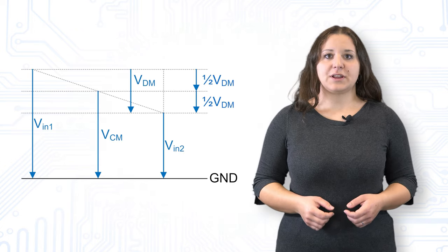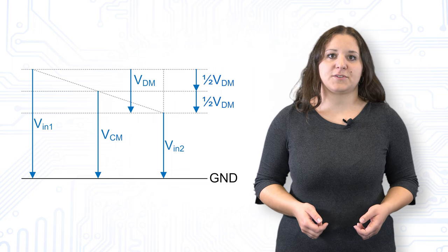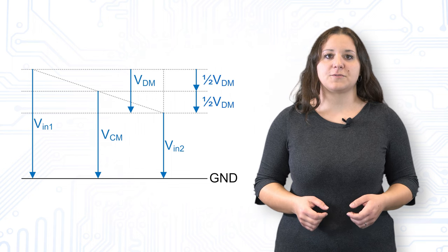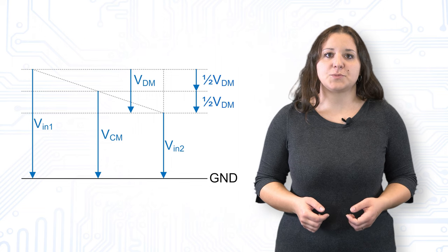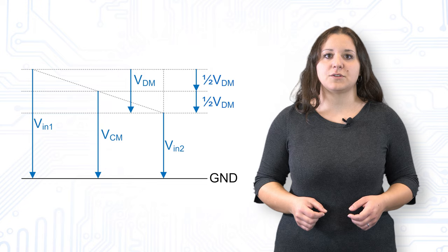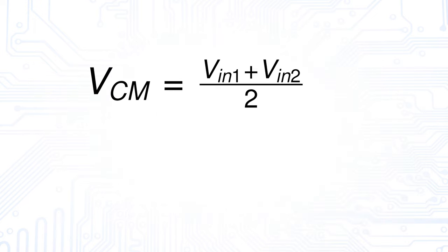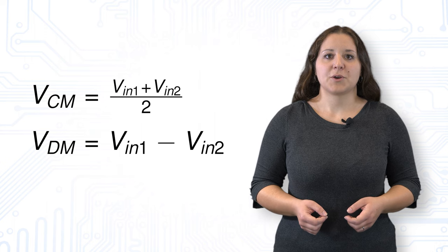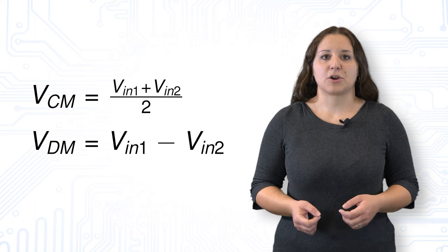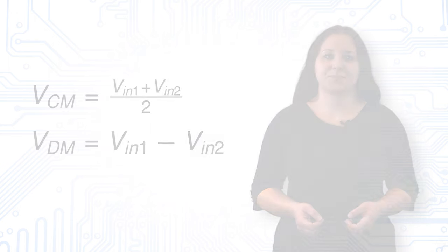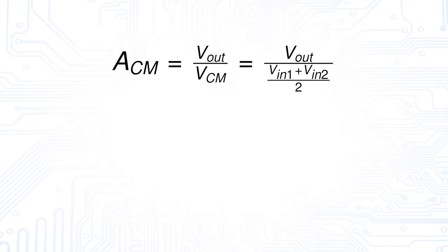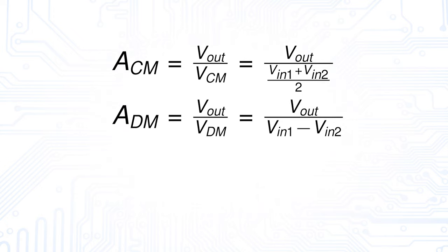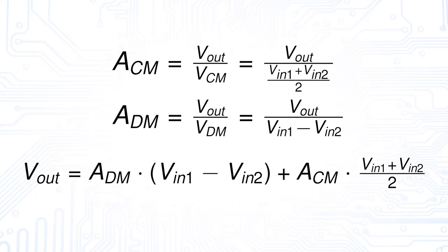We have already learned that for differential amplifiers it is useful to define two different types of input voltages, namely the common mode voltage and the differential mode voltage. In order to split each possible input voltage into these two voltages, we need to define them first. We define the common mode voltage as one half of the sum of our two input voltages. The differential mode voltage will be the difference between input voltages 1 and 2. This distinction is important when we are working with real differential amplifiers, since their common mode gain is unfortunately not zero. Our new definitions allow us to calculate the common mode gain as well as the differential mode gain, and these values in combination with the common mode and differential mode voltage allow us to calculate the real output voltage of our circuit.